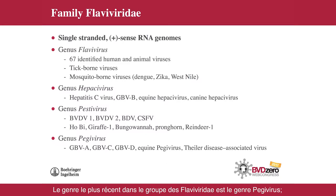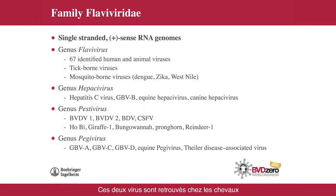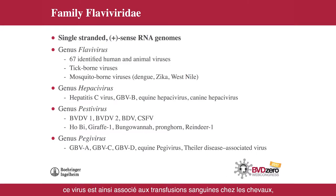The newest genus in the Flaviviridae is the Pegivirus genus — a very recent group. It includes several GB viruses isolated from a human patient designated GB, but also several newly recognized species including the equine Pegivirus and the Theiler's disease-associated virus. Both of these viruses are found in horses and are very similar to hepatitis C in that they cause liver problems. The Theiler's disease-associated virus is also termed serum sickness virus or serum hepatitis virus, and is associated with blood transfusions in horses, creating a hepatic syndrome.